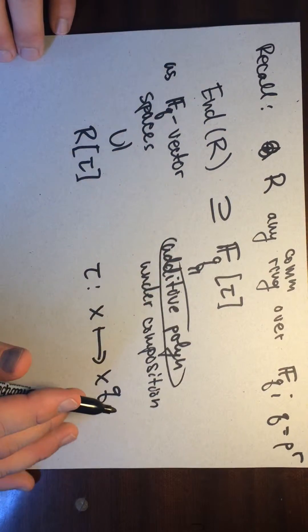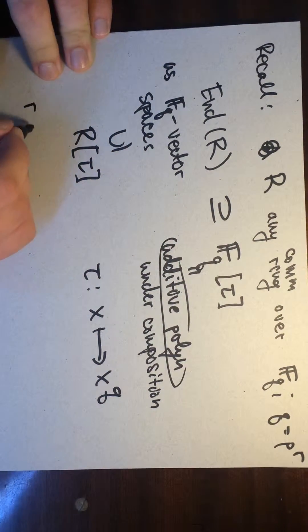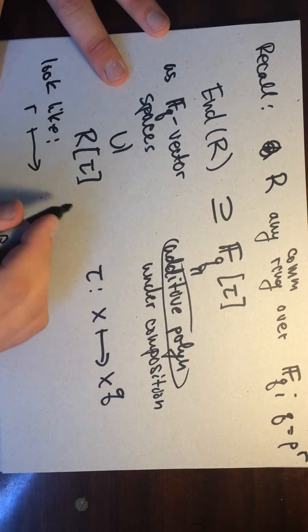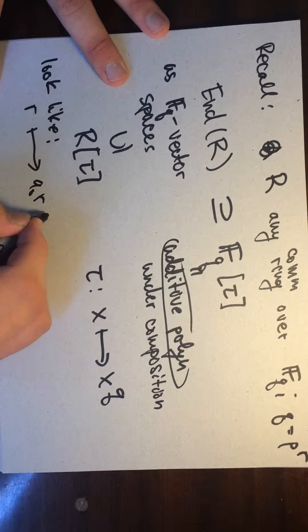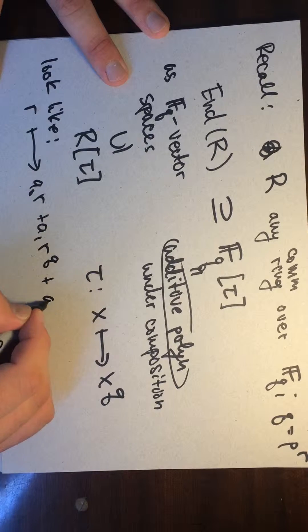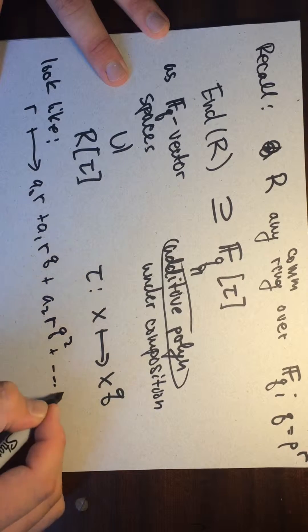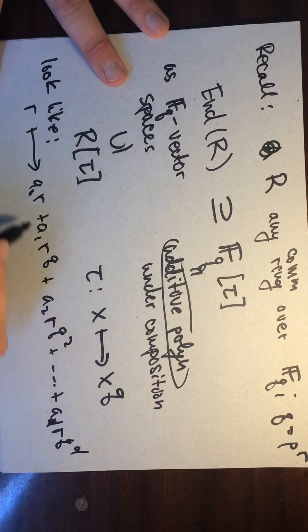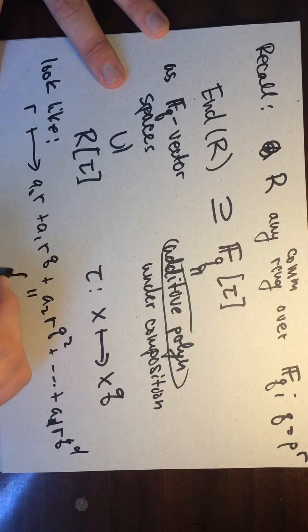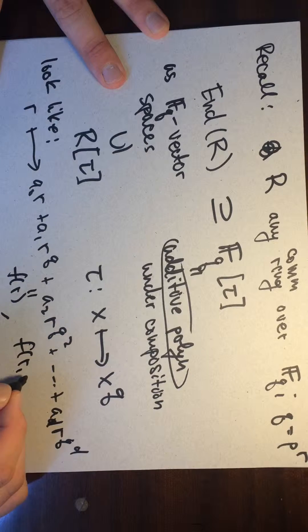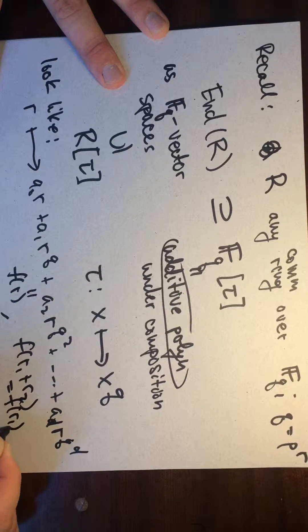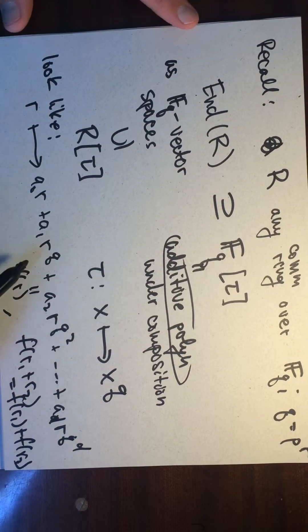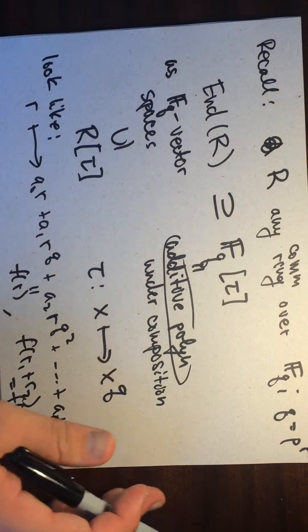And so really what these endomorphisms look like is they send R to something like, what do they look like? They look like this. They send R to like R, let's say A_0 R, plus A_1 R to the Q, plus A_2 R to the Q squared, plus dot dot dot, plus A_D R to the Q to the D here. And then this thing has the property that if we call this F of R, this thing has the property that F of R_1 plus R_2 is equal to F of R_1 plus F of R_2. Okay. So they break up. They're additive. And this just has to do with the fact that we're only using Qth powers here. So this is what an additive polynomial is.